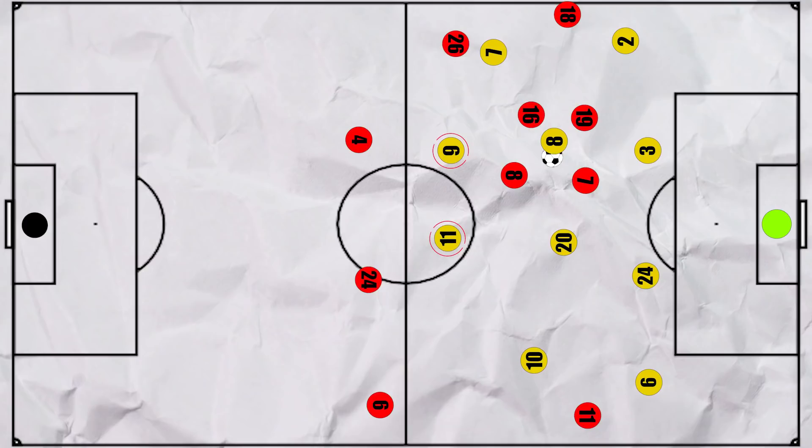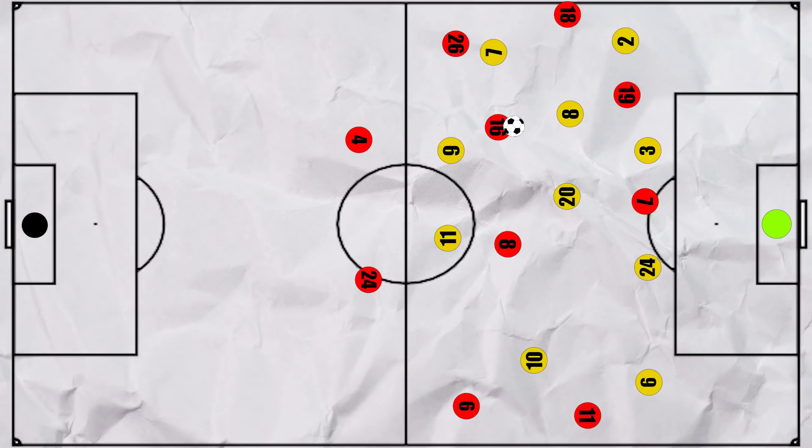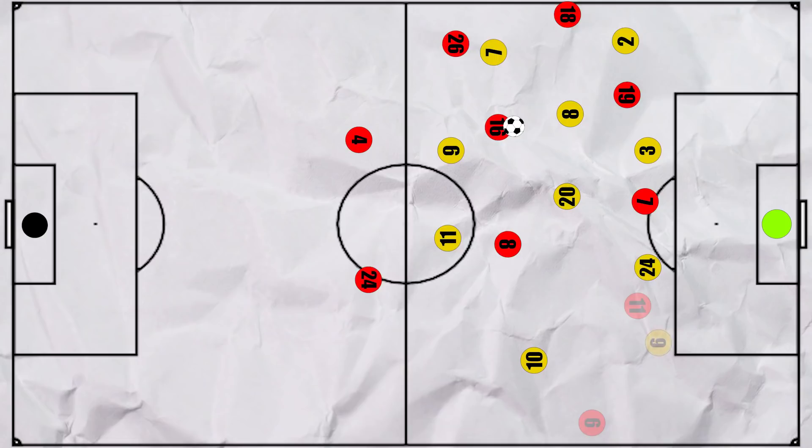But with Spain in possession overloading the left, it meant that the right hand side opened up for the switch. But this switch was not as effective as it could have been for a few reasons. In these situations, Llorente and Torres tended to occupy similar vertical zones, rather than having a man in the half space forcing the fullback narrow.